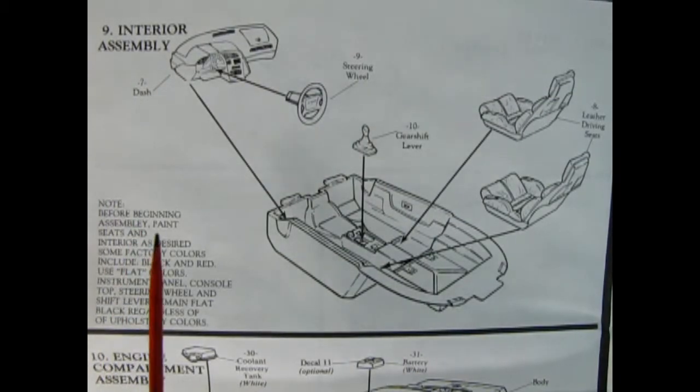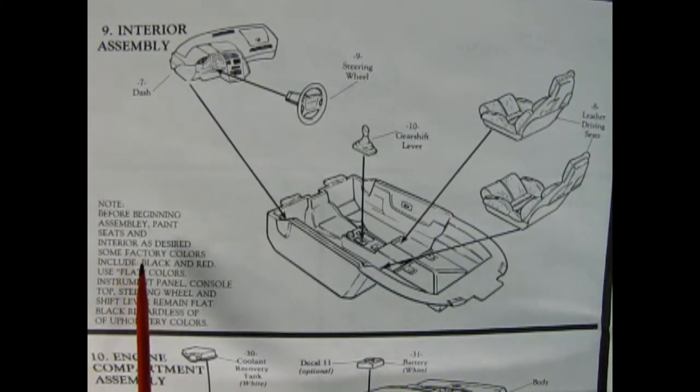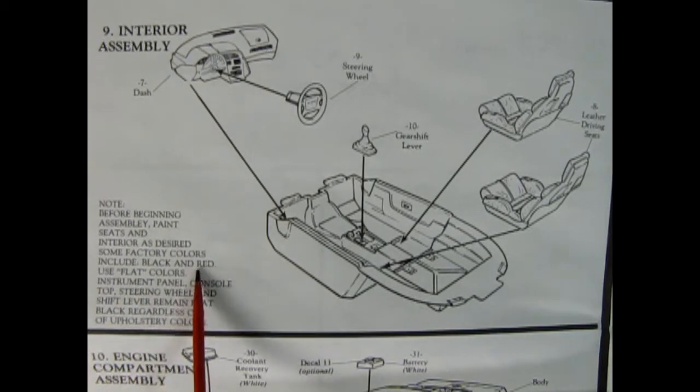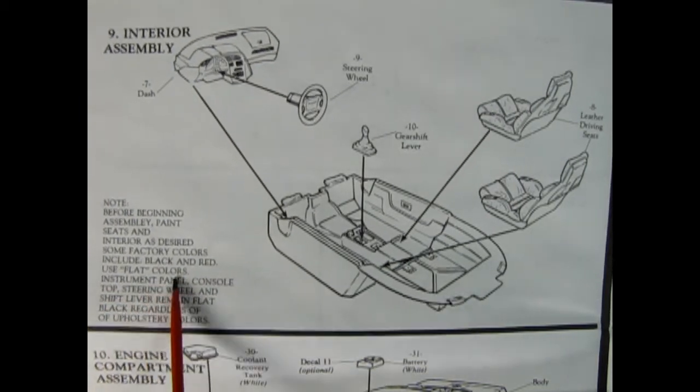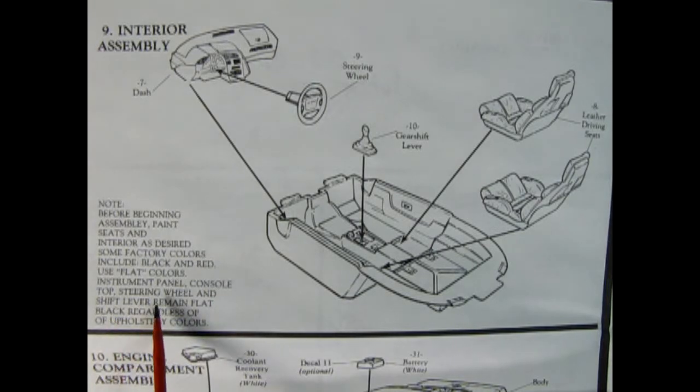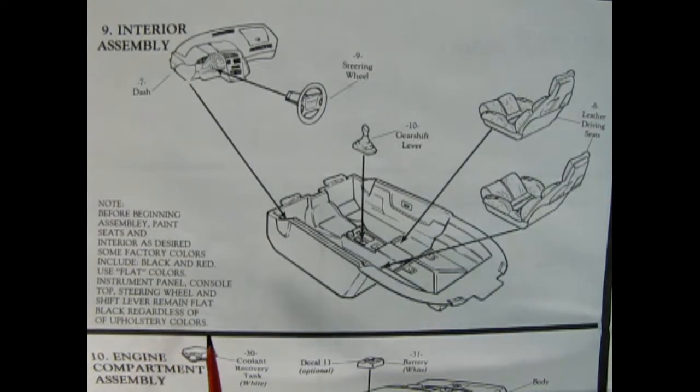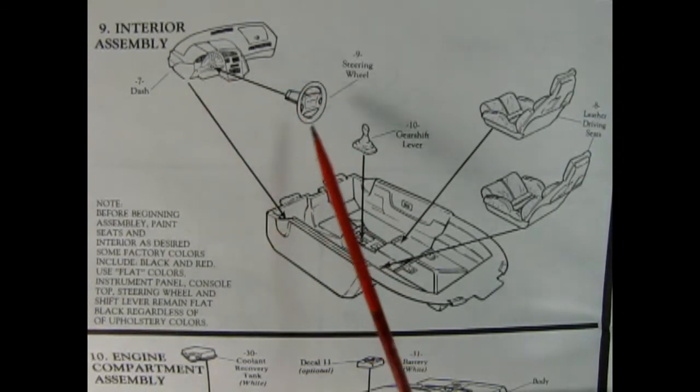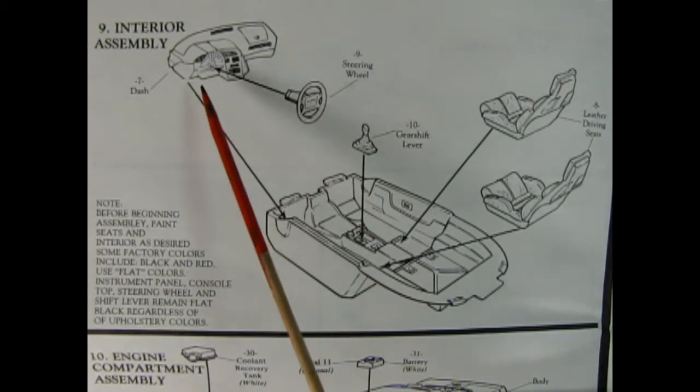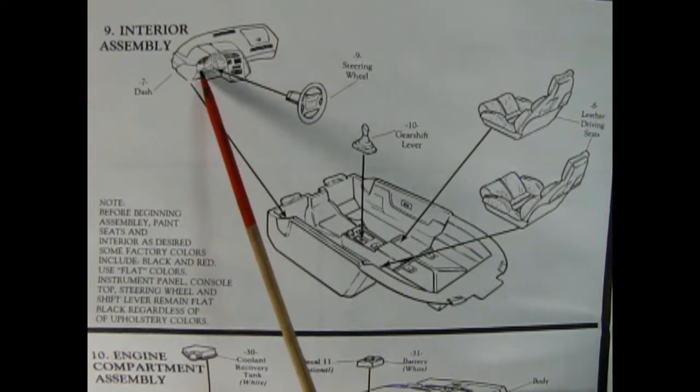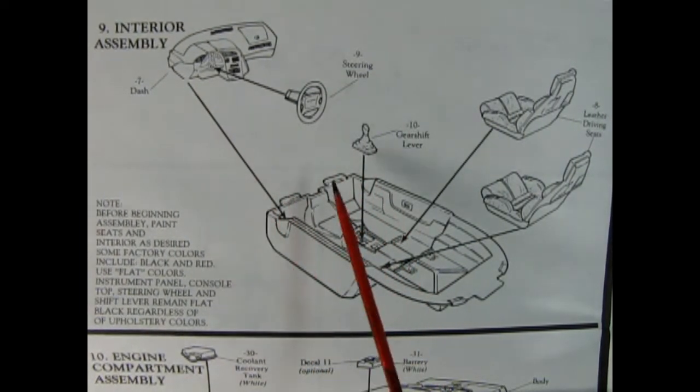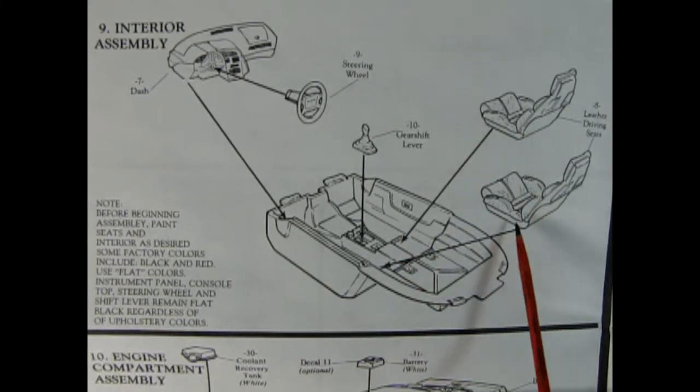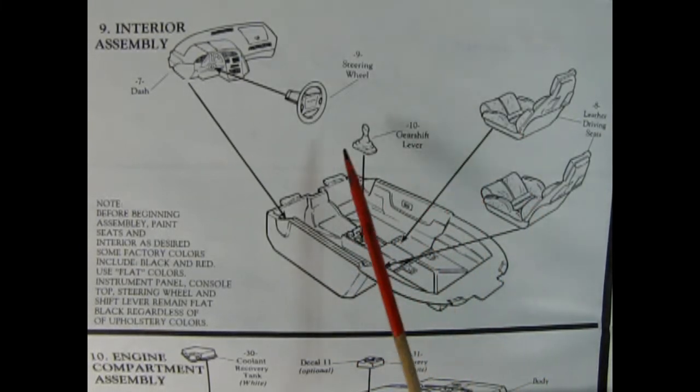Panel 9 shows our interior assembly and there's a note here it says before beginning assembly paint seats and interior as desired. Some factory colors include black and red. Use flat colors. Instrument panel console top steering wheel and shift lever remain flat black regardless of upholstery color. So that's good to know. You can also check out images of this on Google. So there's our dashboard and our Corvette steering wheel plugging in place. This has got the newer dashboard compared to some of the earlier models we took a look at. Then we've got our leather driving seats dropping in place as well as our gear shift lever.